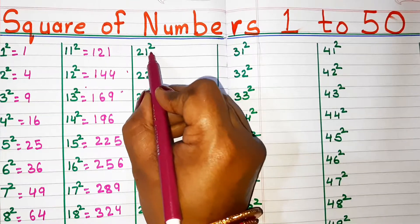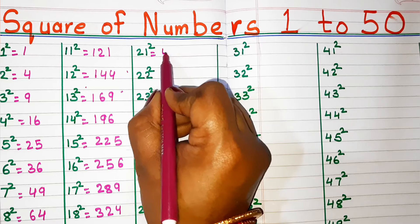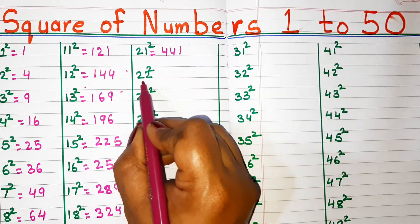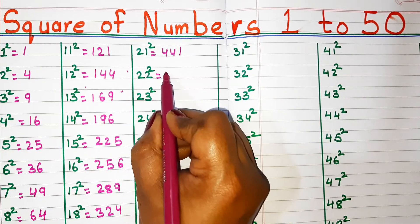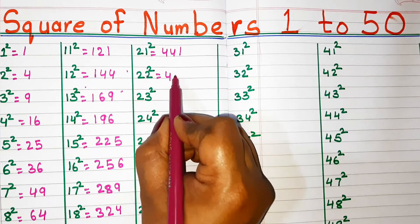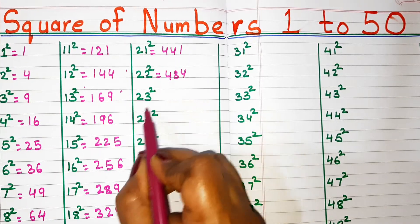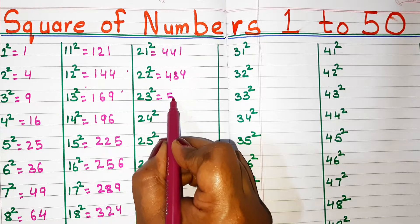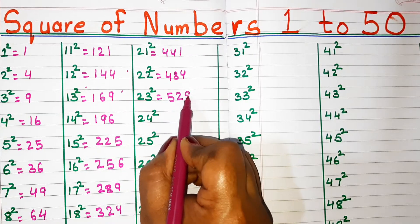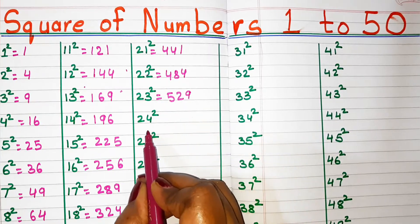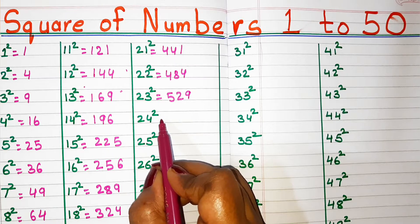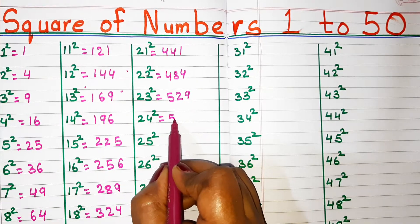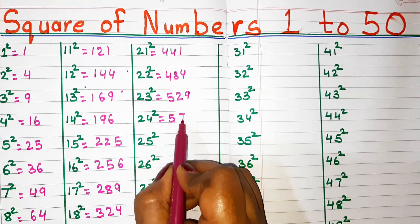Square of 21, 441. Square of 22, 484. Square of 23, 529. Square of 24, 576.